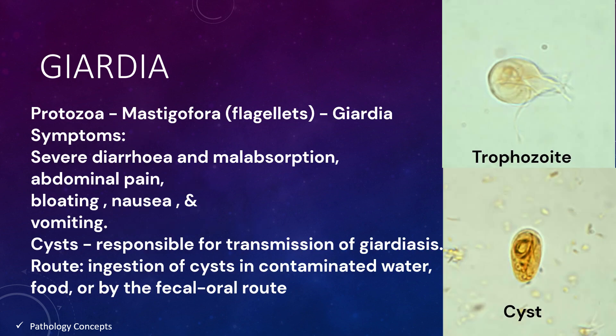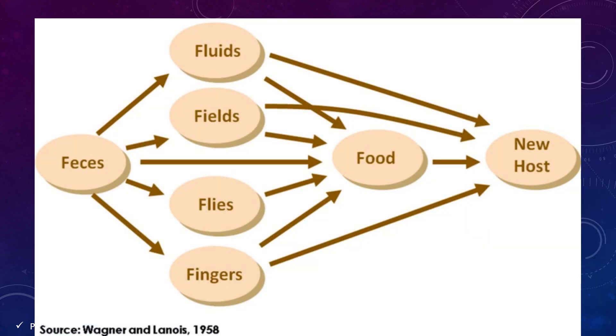The next organism is Giardia. The sub-kingdom is Protozoa, Mastigophora (flagellate). The genus is Giardia. Symptoms of Giardia infection are severe diarrhea, malabsorption, abdominal pain, bloating, nausea, and vomiting. The cysts are the resistant forms and are responsible for transmission. Both cysts and trophozoites can be found in feces, which are called the diagnostic stages. The route of infection is ingestion of cysts in contaminated water, food, or by the feco-oral route.